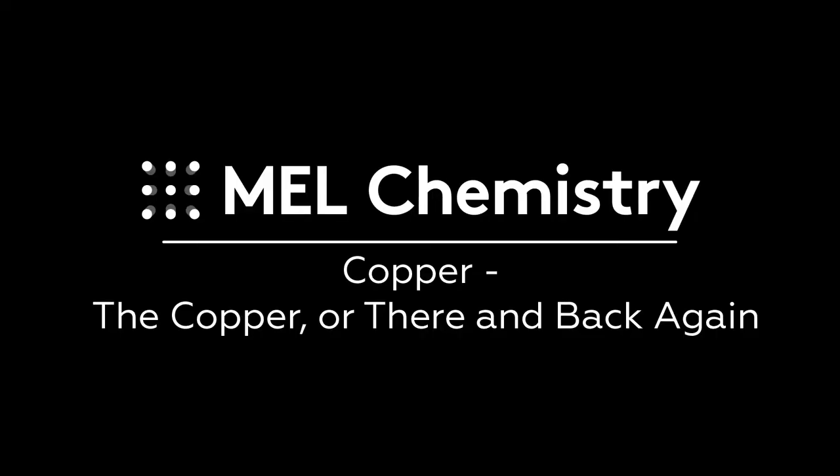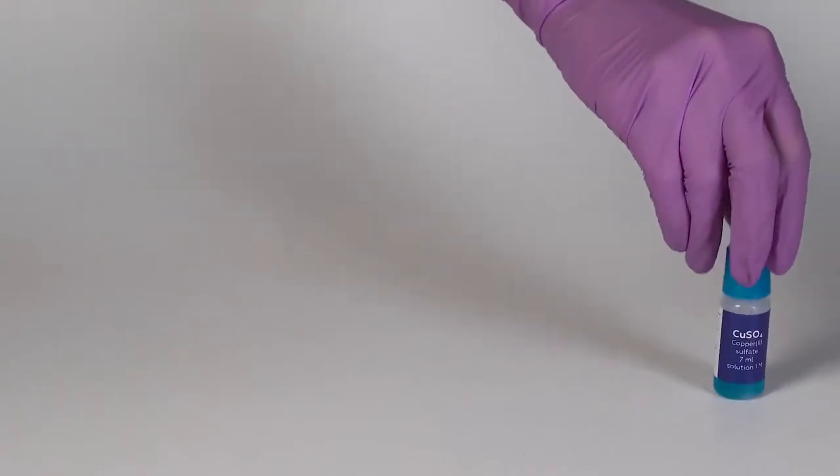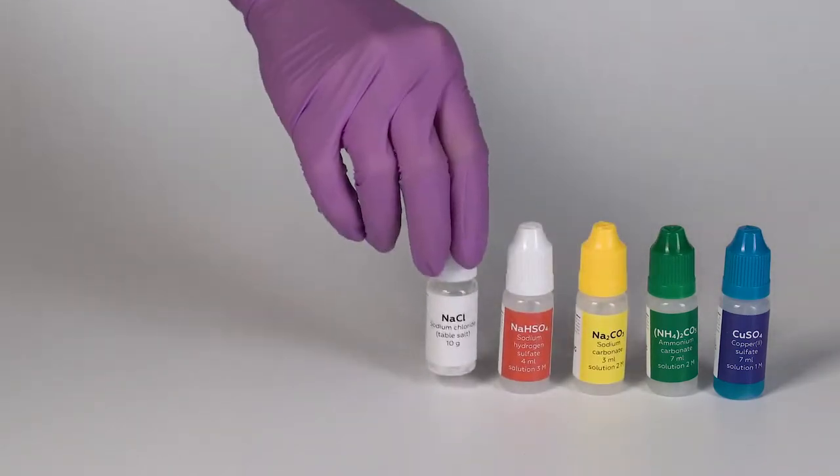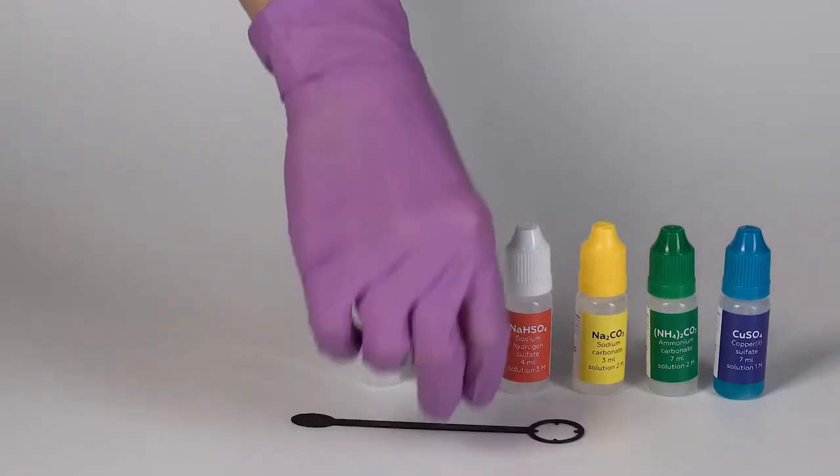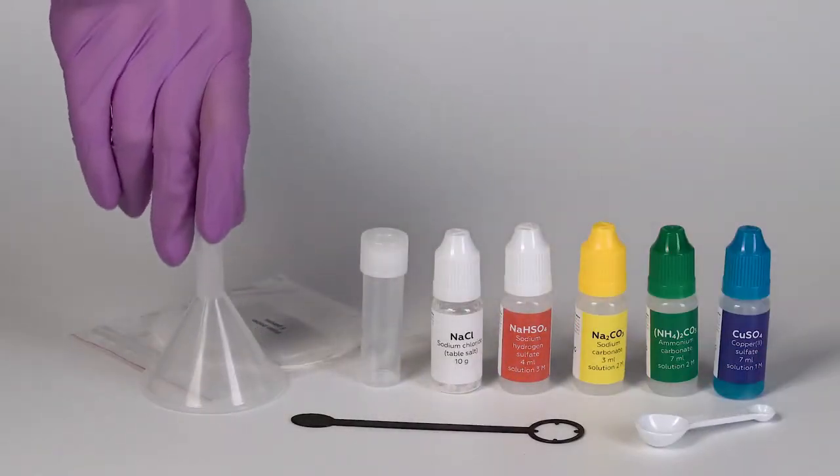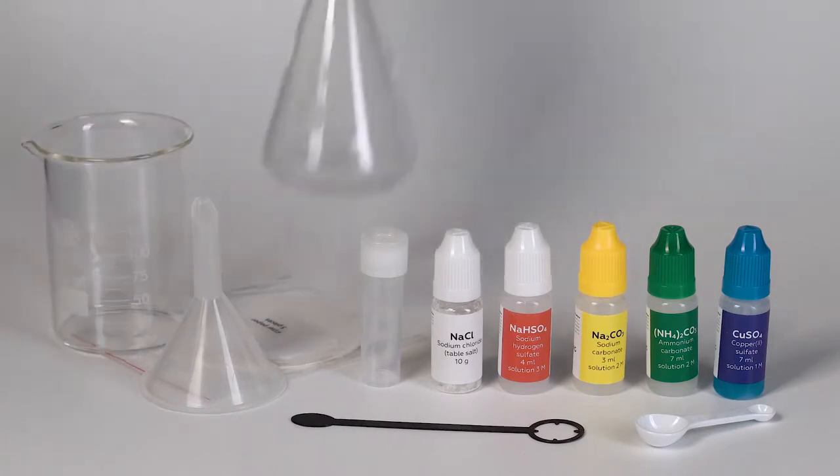For the experiment, copper there and back again, you'll need solutions of copper sulfate, ammonium carbonate, sodium carbonate, and sodium hydrogen sulfate, sodium chloride, the vial, the vial holder, a measuring spoon, and filter paper. You will also need a funnel, a beaker, and a flask from the starter kit.